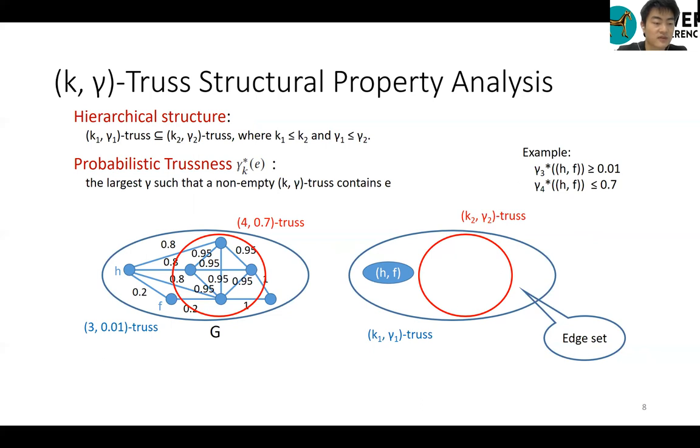For example, if we have known these k-gamma trustness, we can at least determine that gamma-3-star-HF is greater than or equal to 0.01 and gamma-4-star-HF is less than or equal to 0.7.